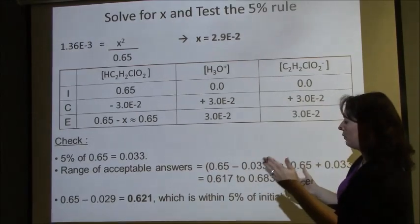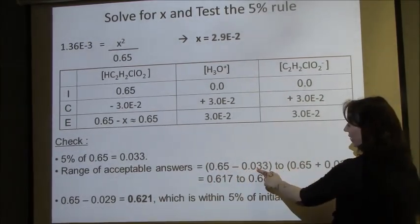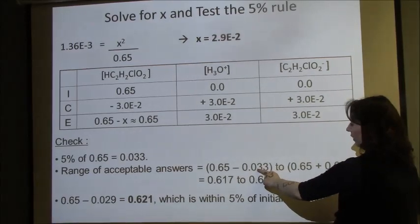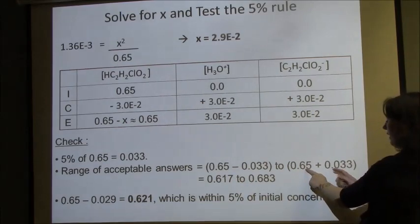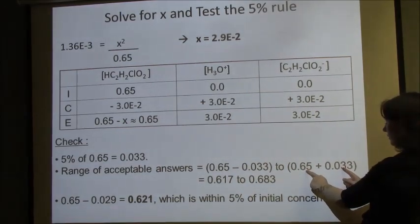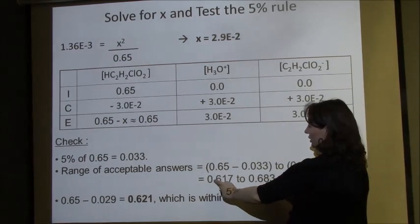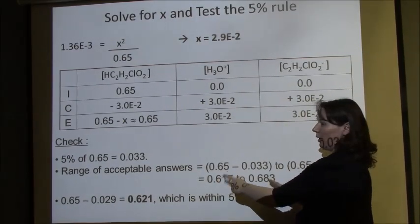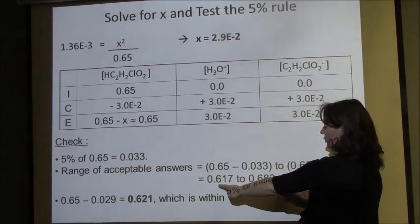The range of acceptable answers for my final answer is 0.65 minus 0.033, which is 0.617, all the way up to 0.65 plus 0.033. In other words, the range of answers that I would accept and still believe that this approximation was valid is this range right here.